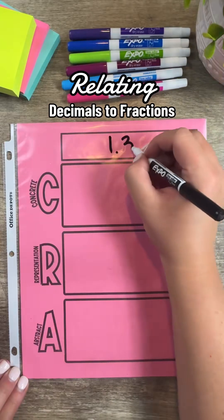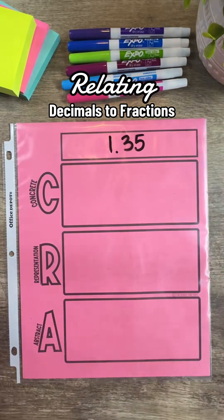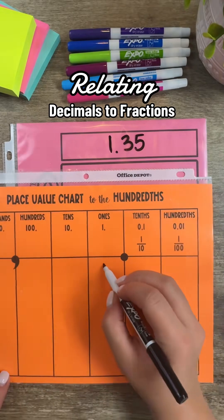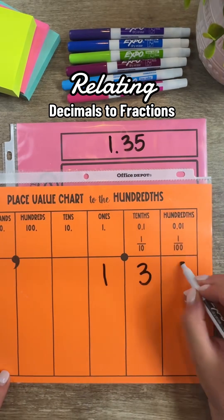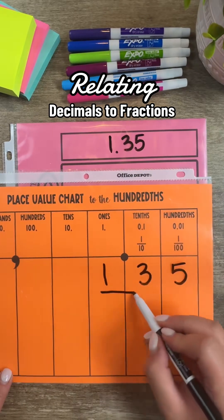Let's relate decimals to fractions using base 10 blocks. We can reference a place value chart to see how many hundredths are in 1.35.